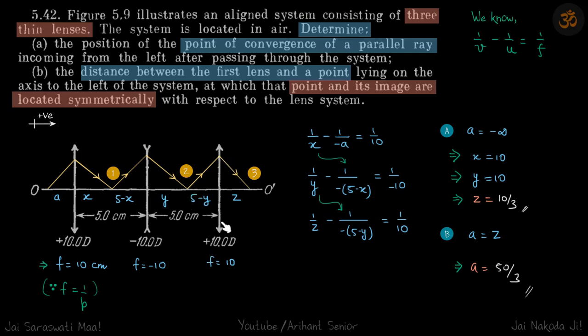Now this is the object for this lens, so minus of 5 minus y and here v at z. So we have to put the value of x from here to here and then we need to put the value of y from here to here. So you will get a relation between a and z. So basically we will get rid of x and we will get rid of y.